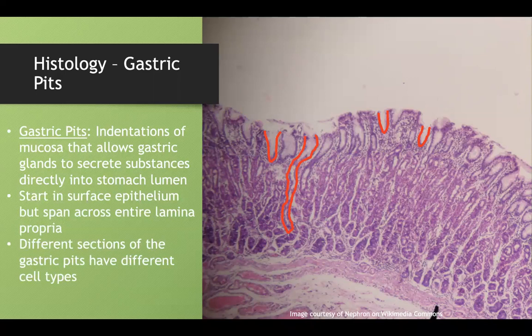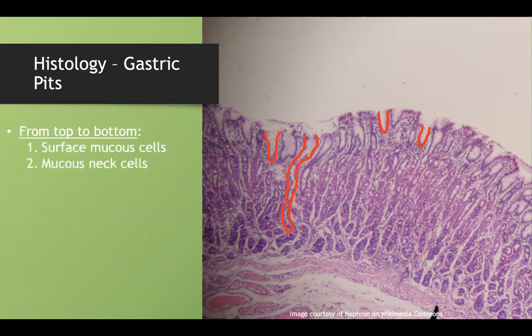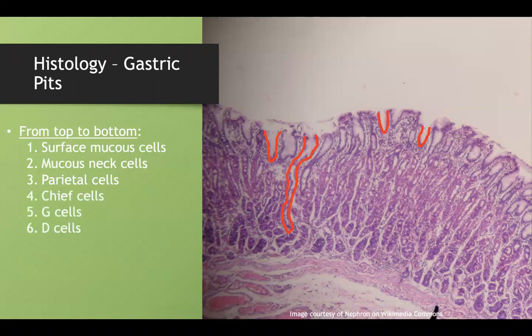Different sections of the gastric pits have different cell types, and different sections of the stomach also have different cell types. Generally speaking from top to bottom: at the very top in the surface epithelial layer are mucus cells — surface mucus cells and mucus neck cells. In the upper glandular layer are parietal cells. In the lower glandular layer are chief cells, G cells, and D cells.